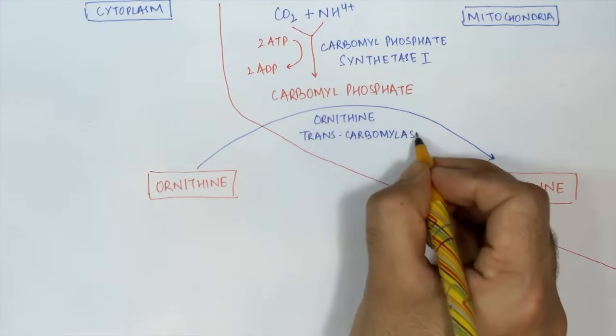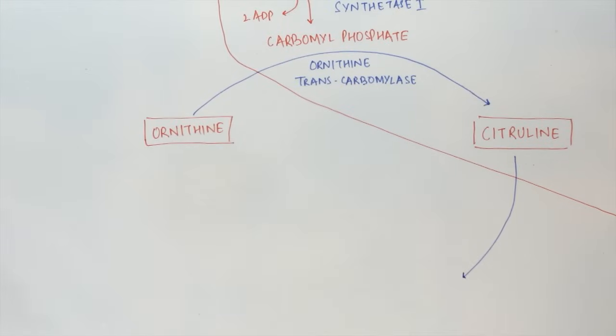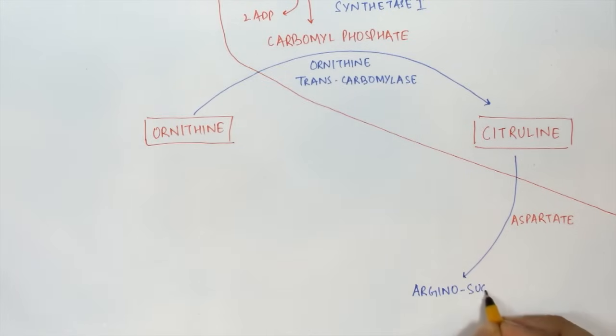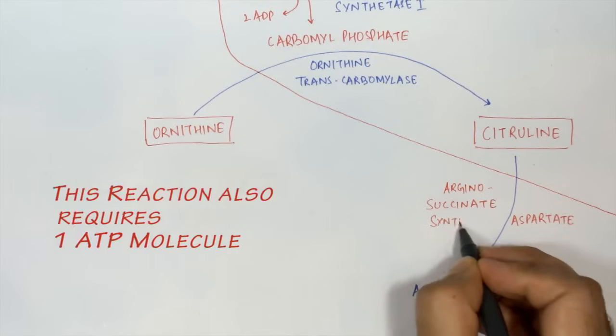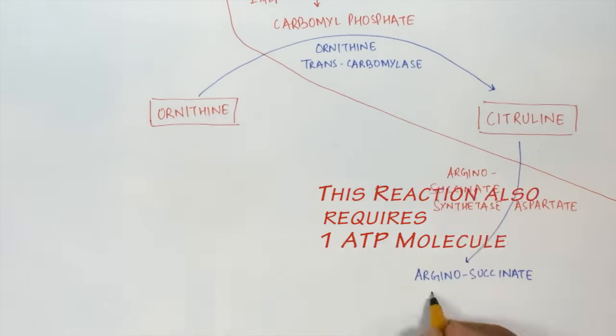In the next step, citrulline is transported into the cytoplasm. It combines with the amino acid aspartate and leads to the formation of arginosuccinate. This reaction is catalyzed by the enzyme arginosuccinate synthetase.